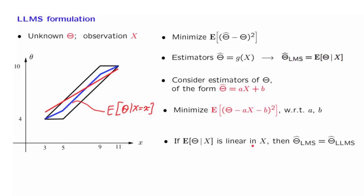But for the general case, in general, this is not going to be the case. The conditional expectation may well turn out to be a nonlinear function of the data, as in this example. And in those cases, the linear least mean squares estimator is going to turn out to be different.